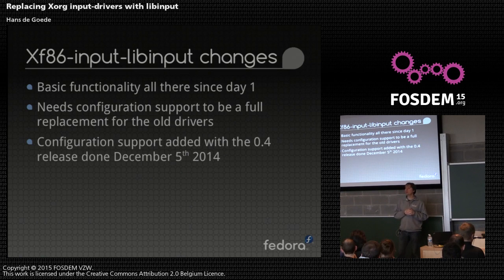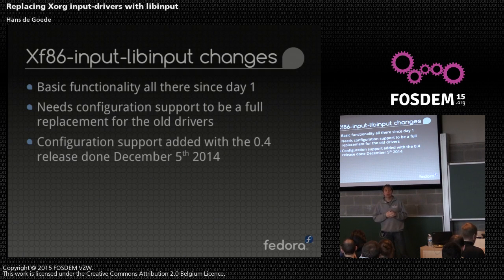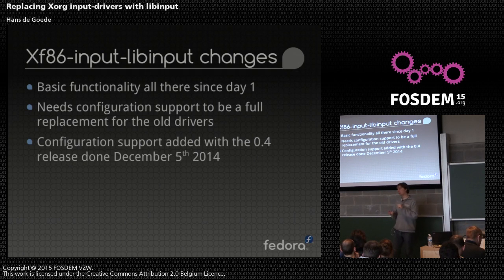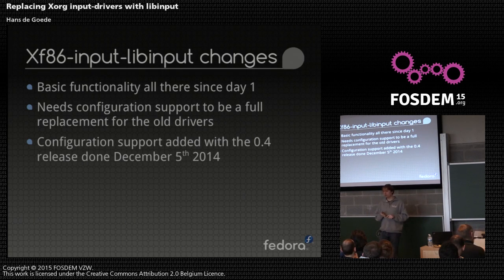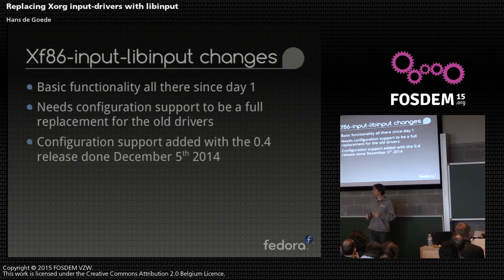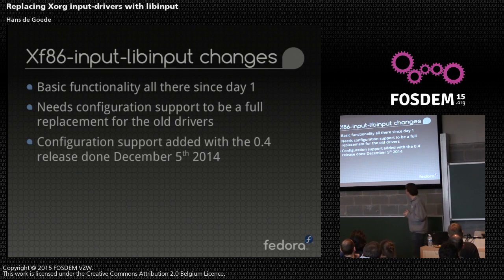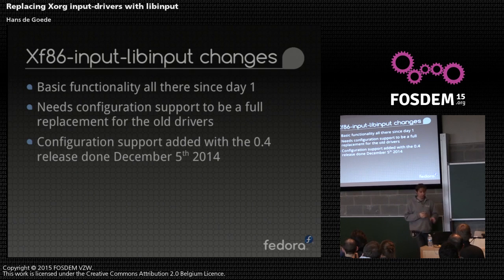We needed an API that desktop environments like GNOME, KDE, or XFCE would be able to use to configure mouse acceleration, left-handed button mapping, tapping enable, two-finger scrolling versus edge scrolling, and whether to use soft button areas on a clickpad or the Apple method of click-finger. That actually landed in the 0.4 release done on December 5th, 2014.